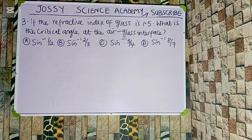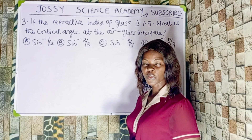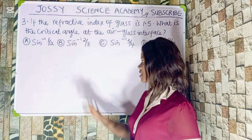If the refractive index of glass is 1.5, what is the critical angle at the air-glass interface? Option A: sin⁻¹(1/2), Option B: sin⁻¹(2/3), Option C: sin⁻¹(3/4), Option D: sin⁻¹(8/9). Remember that the relationship connecting the refractive index and the critical angle is: n = 1 over sin C.